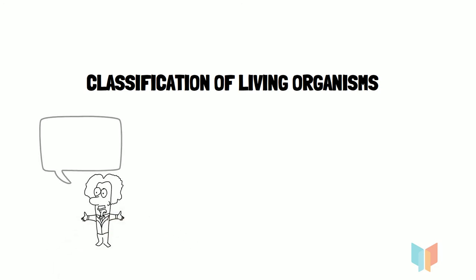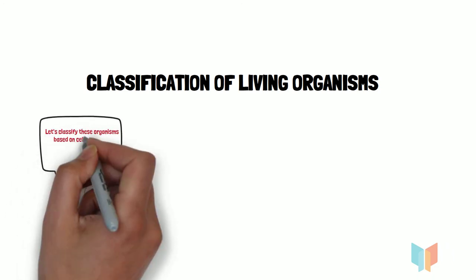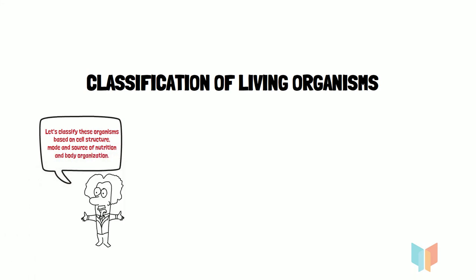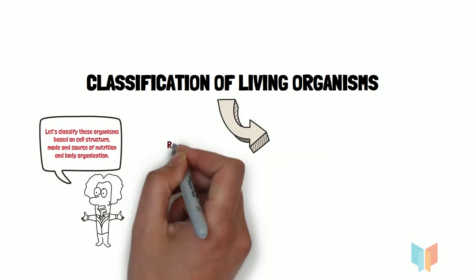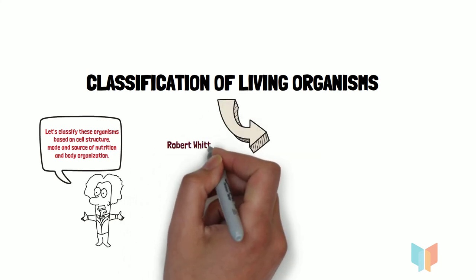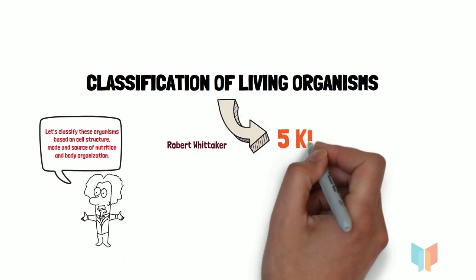These categories are based on features like cell structure, mode and source of nutrition, and body organization. Whittaker classified all organisms into five kingdoms.